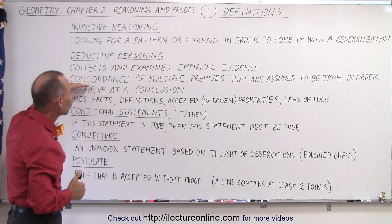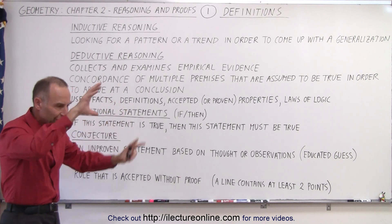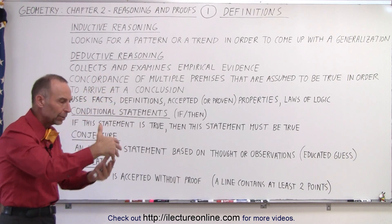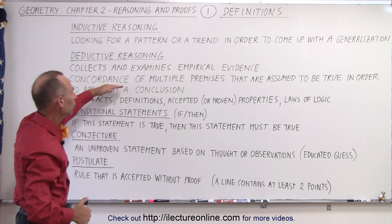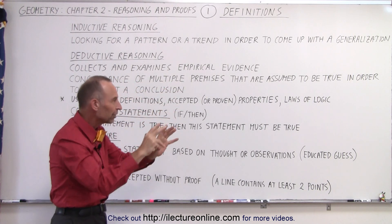Also, we look for the concordance of multiple premises. What that means is we look for different things, different pieces of information, and look for the common pattern, how they relate to one another in a logical sense. So that's what we mean by concordance of multiple premises. We look at different things, and we look for the similarity between those.